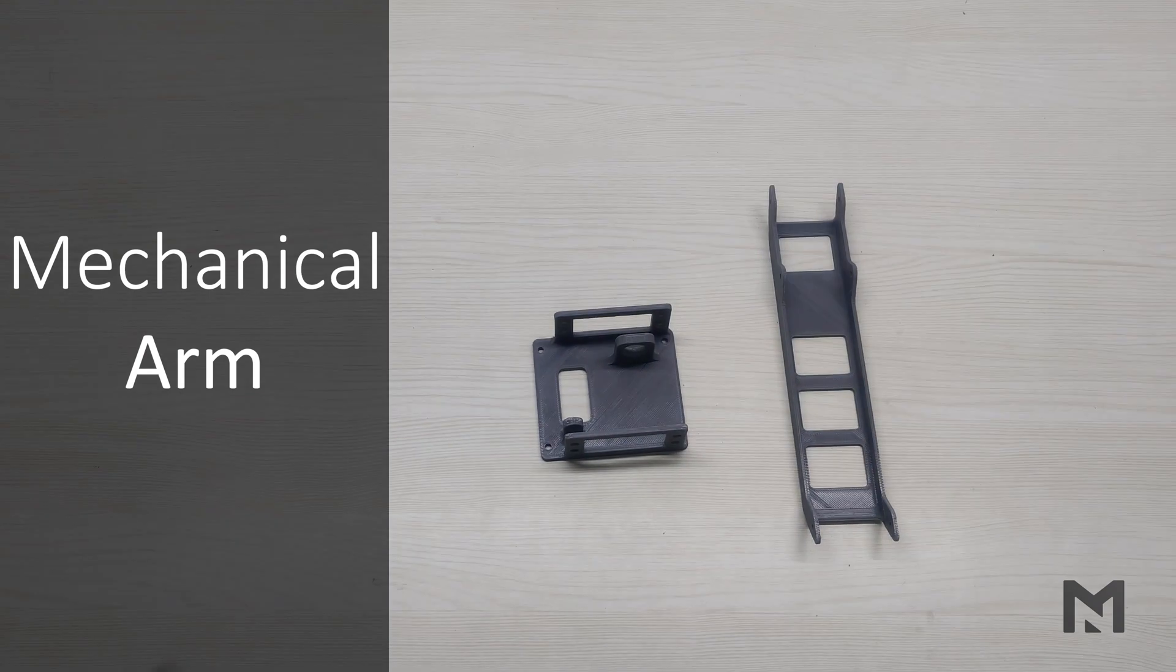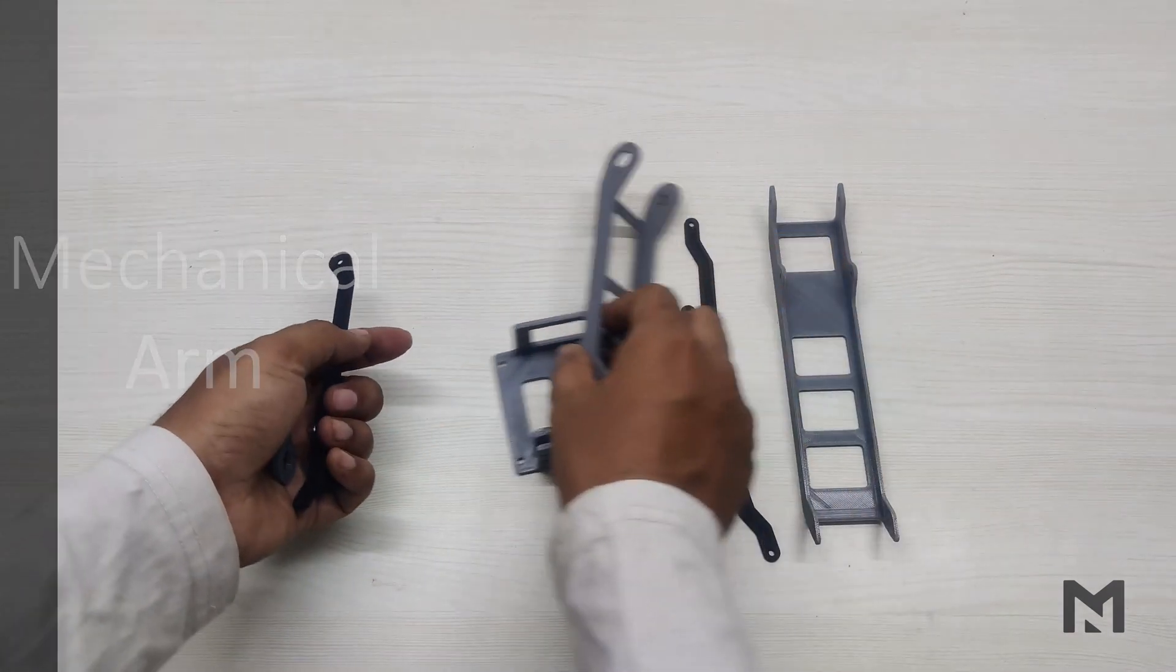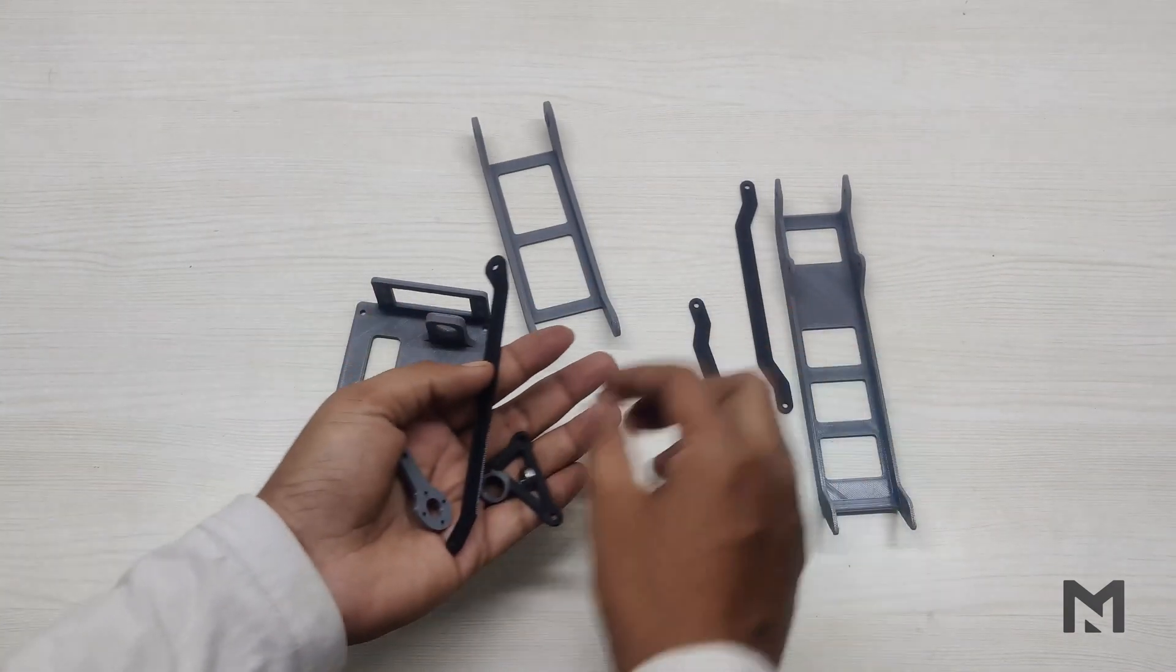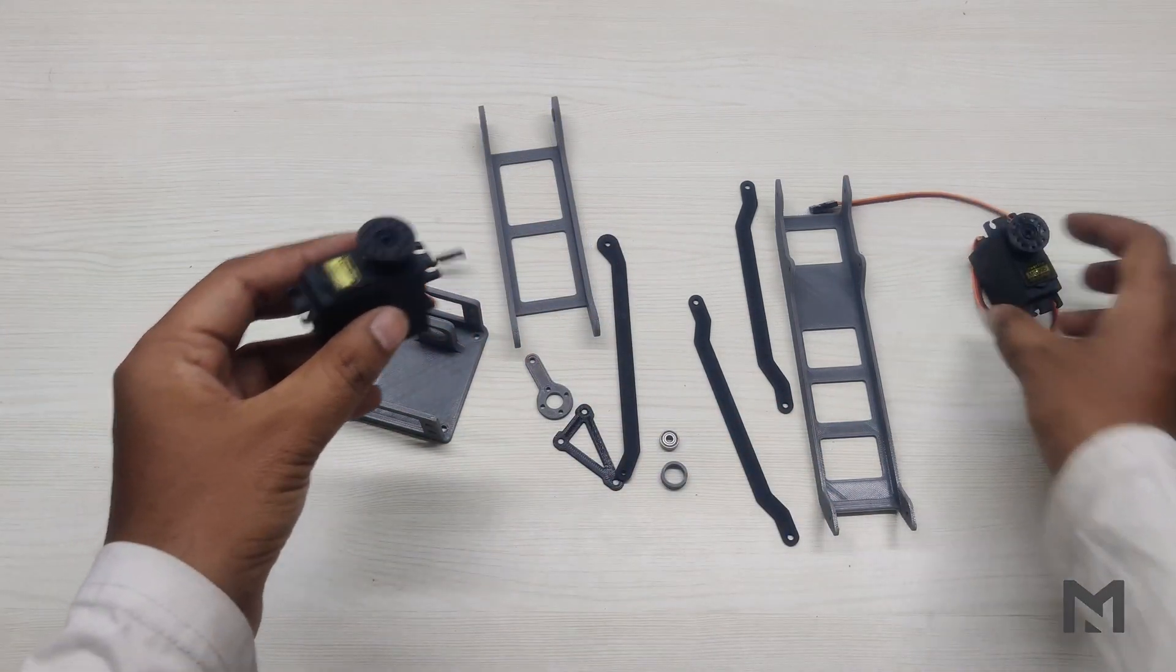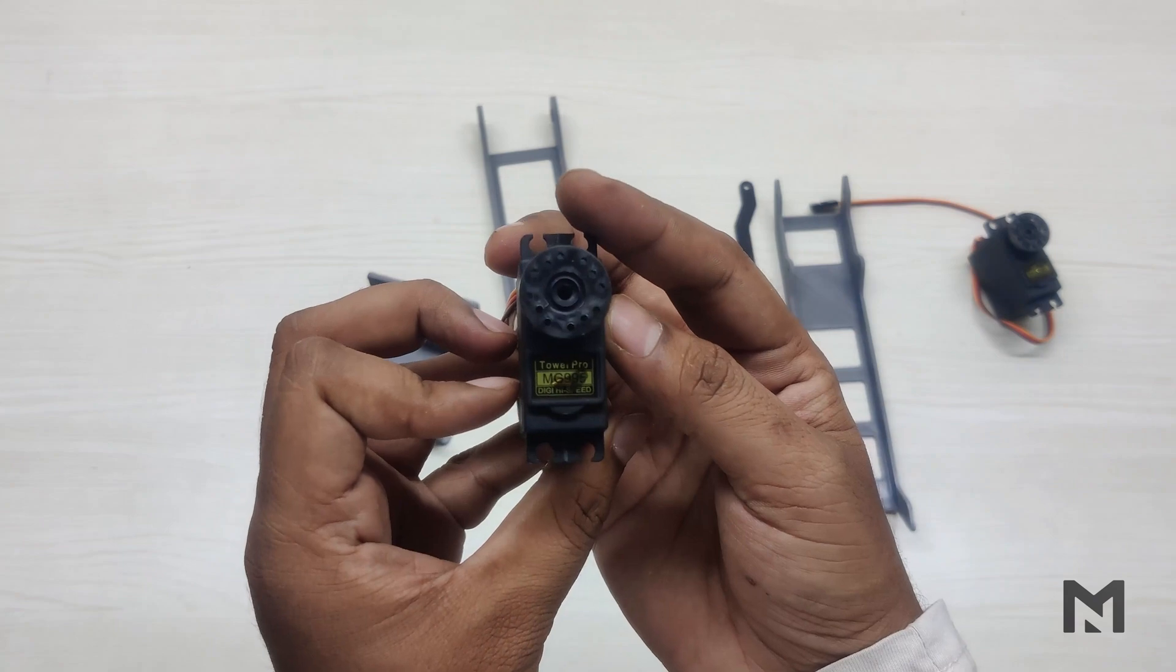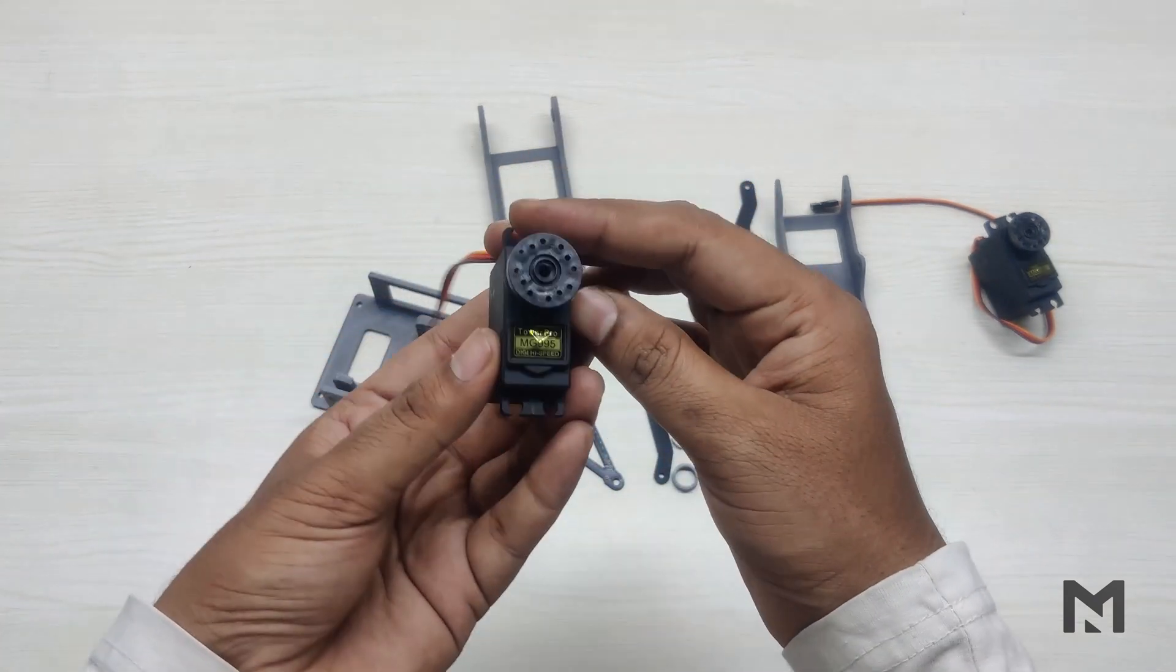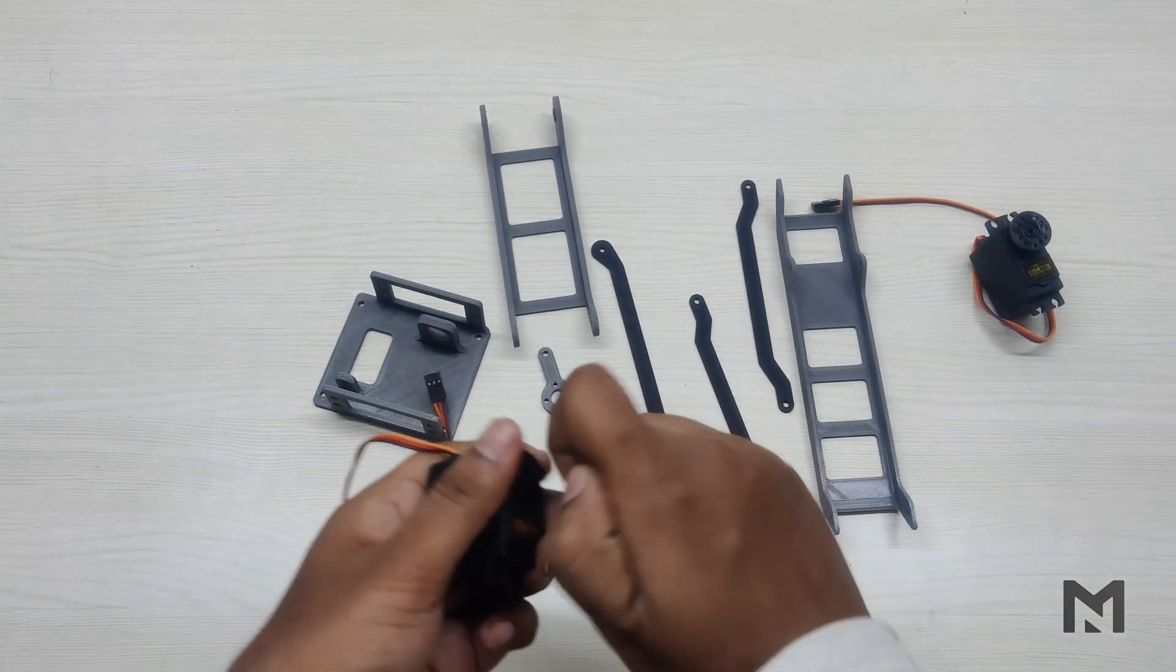Now we'll start the assembly of the mechanical arm. It's made up of three parts: the horizontal arm, the vertical arm and the base. I am using two MG995 servo motors to power the mechanical arm. It has a torque of 10 kg cm. The best buy link for the part is in the description.